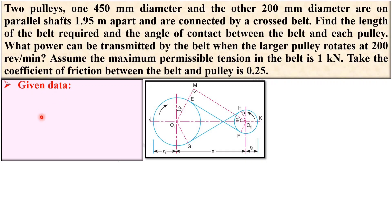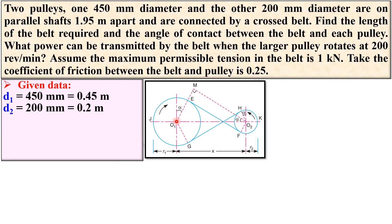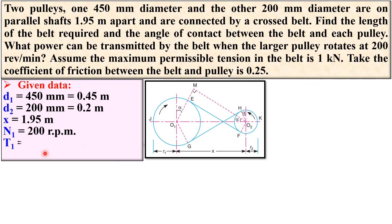Take the coefficient of friction between the belt and pulley as 0.25. Now write down the given data in symbolic notation: d1 = 450 mm, d2 = 200 mm, x = 1.95 m, L = ?, P = ?, n1 = 200 rpm, T1 = 1 kN (maximum tension), and μ = 0.25.